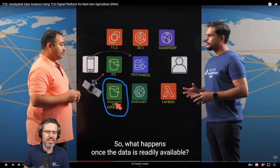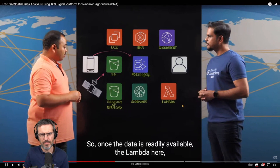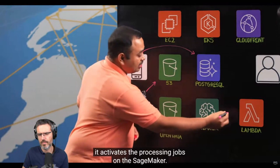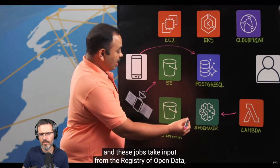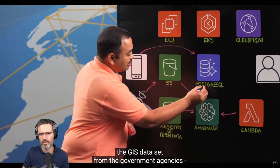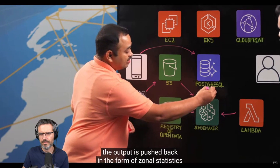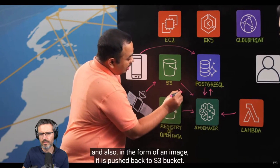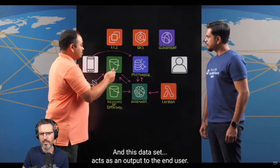The Registry of Open Data is data that was already put on S3 — they're getting geospatial data in terms of coordinates from it. Once the data is readily available, Lambda actuates the processing jobs on SageMaker. Around 3,400 processing jobs are parallelly spun. These jobs take input from the Registry of Open Data, the satellite dataset, and the GIS dataset from government agencies including field boundaries. After processing, output is pushed as zonal statistics to the PostgreSQL GIS database, and as images back to S3.